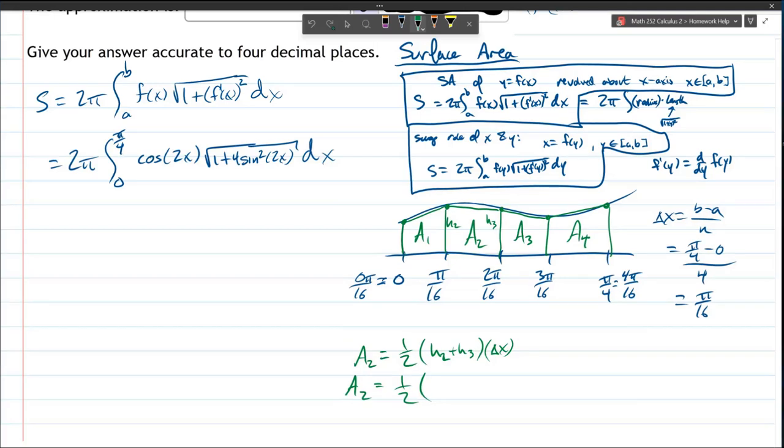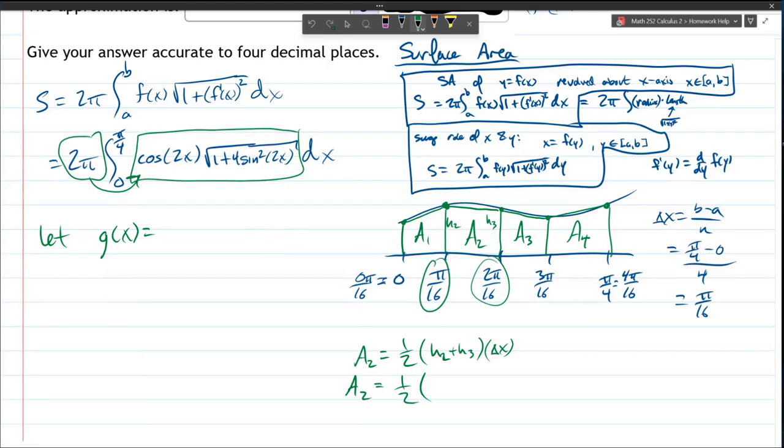All right, what is H2 and H3? Well, H2 is the Y value associated with π over 16. H3 is the Y value associated with 2π over 16. Now these numbers are going to go into here. So let's call this function G of x that I just put in the box. I'm going to include the 2π in there as well, push the 2π through. You can leave the 2π out and just do it at the end, that's fine as well.